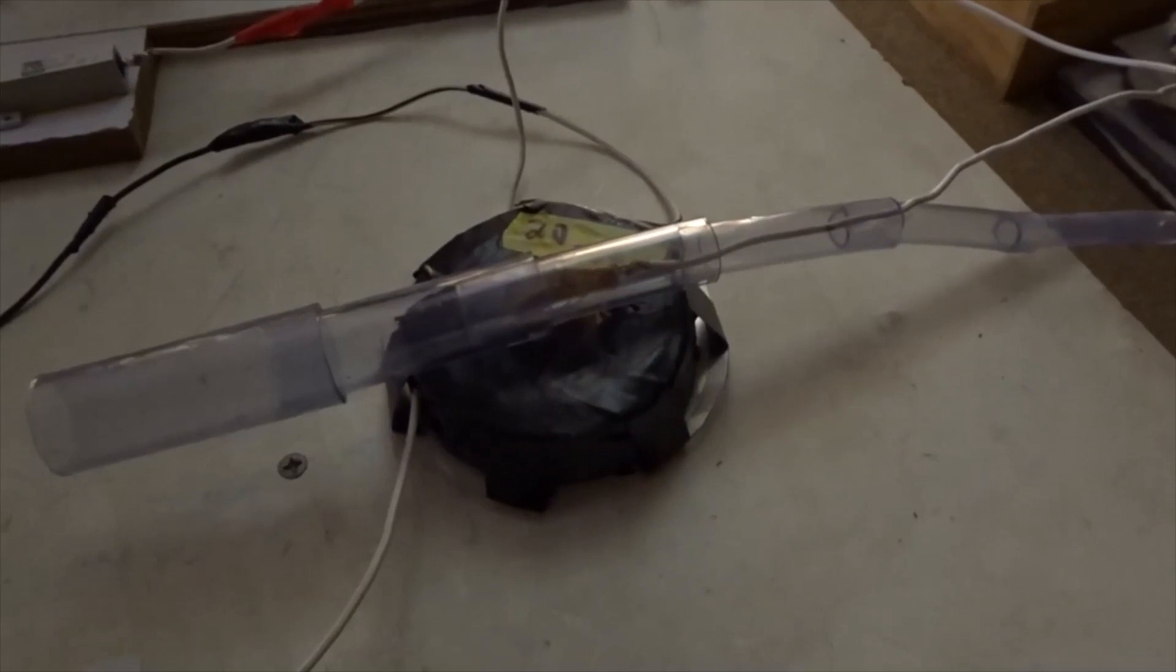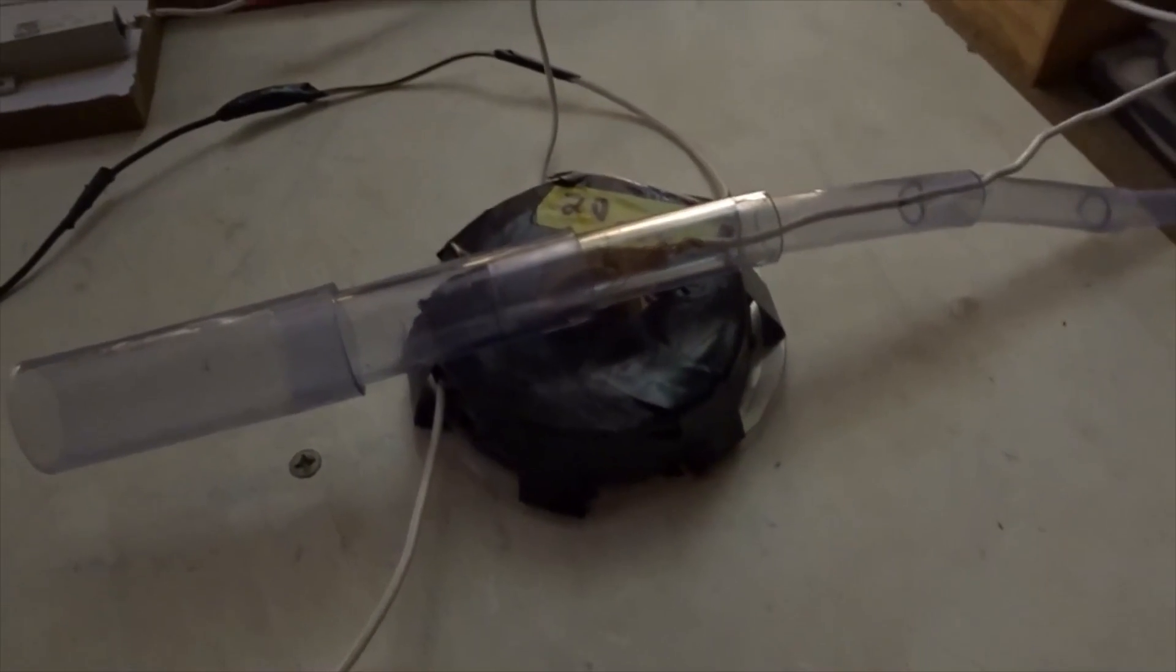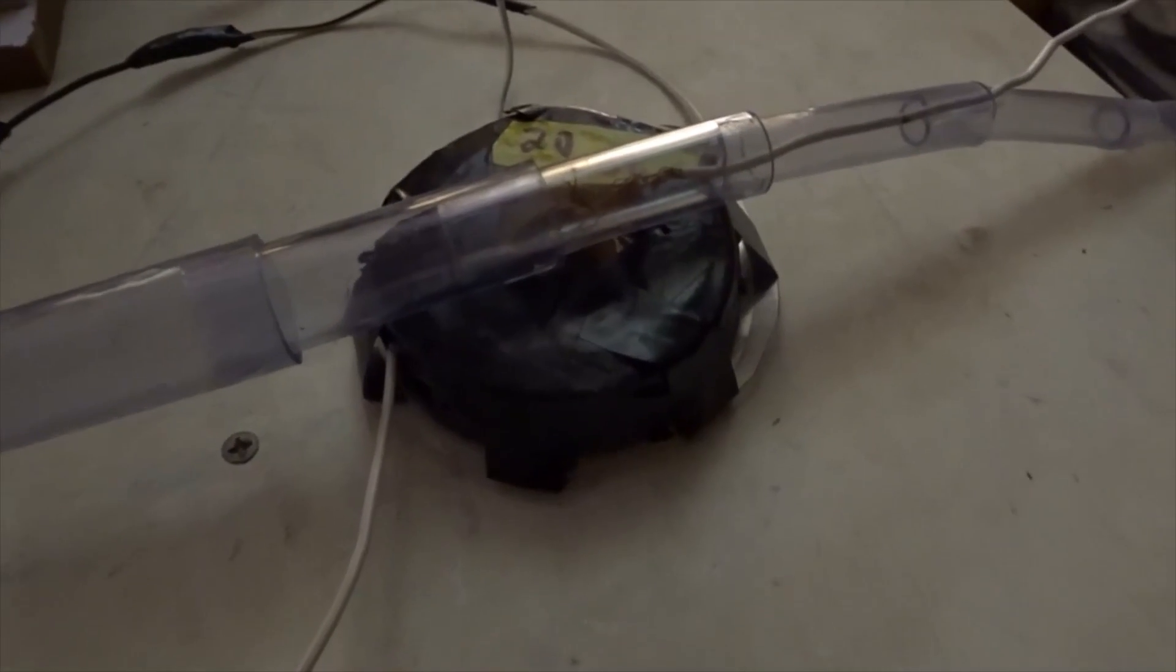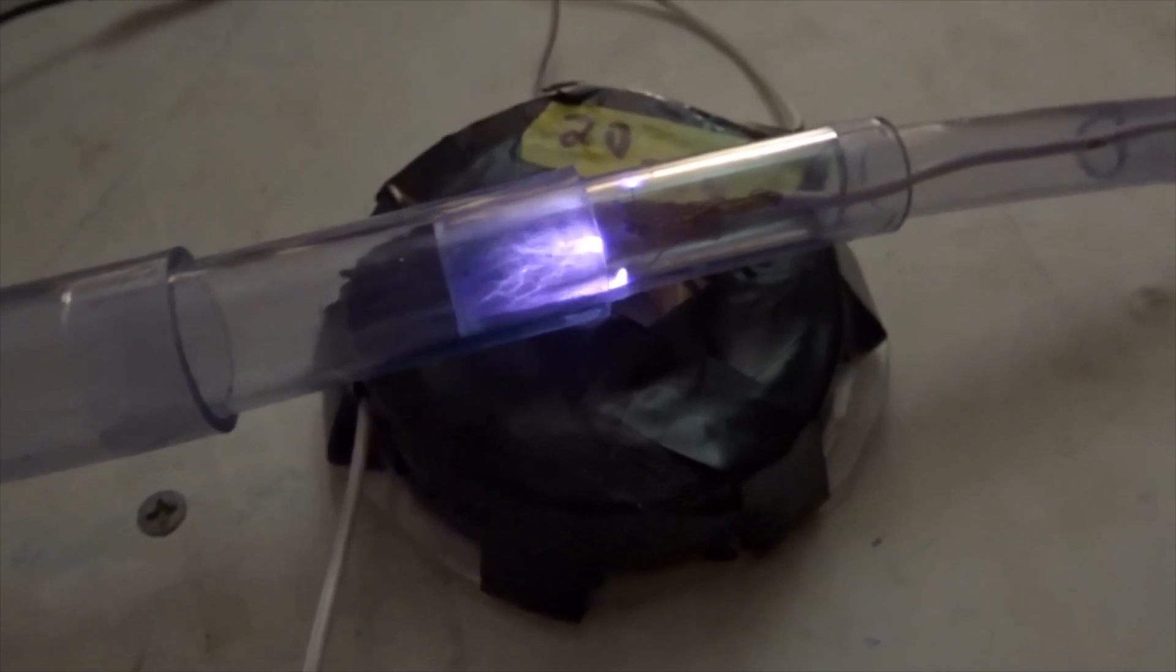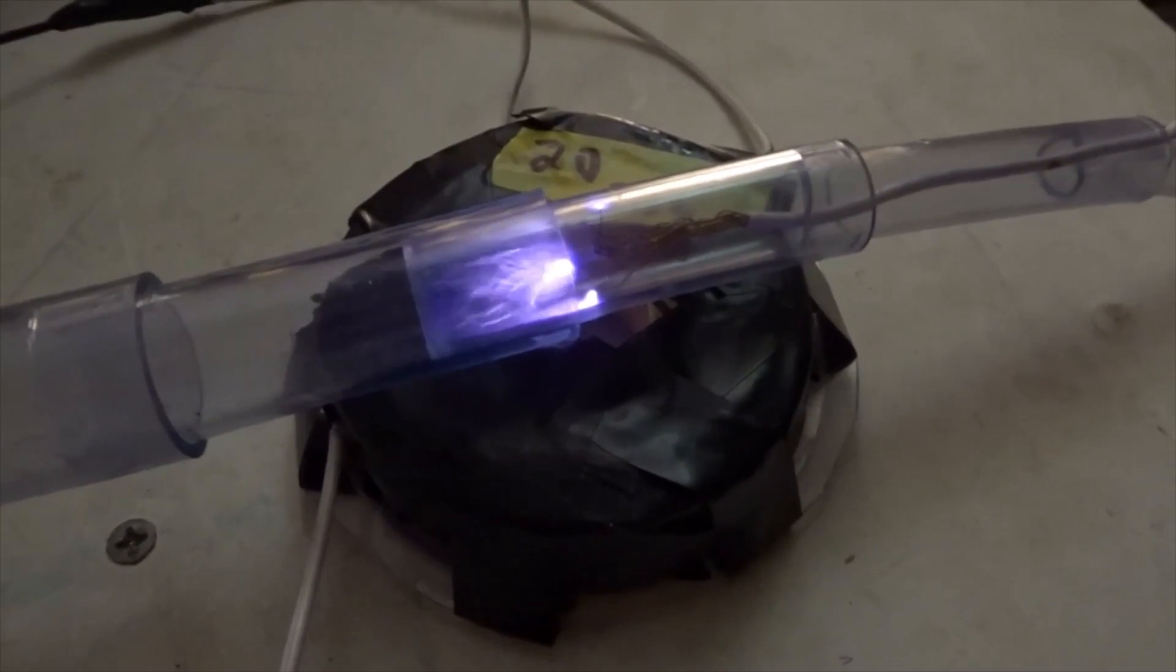Next, if we add Tesla coil energy to that aluminum plate and put a wire coil on top of it and give it a path to ground, we see a similar stimulus when a path to ground overrides the repelling influence of the aluminum plate.